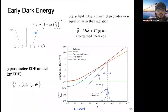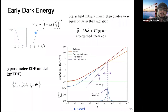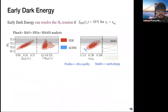This is a three-parameter model. The extra parameters added with respect to Lambda CDM are: the fraction of early dark energy at the redshift when it becomes dynamical, the redshift at which it becomes dynamical, and the initial value of the scalar field.